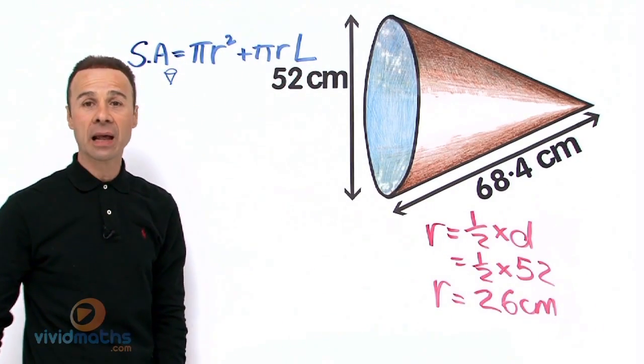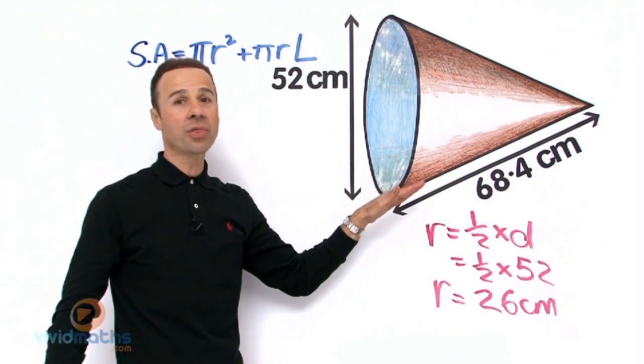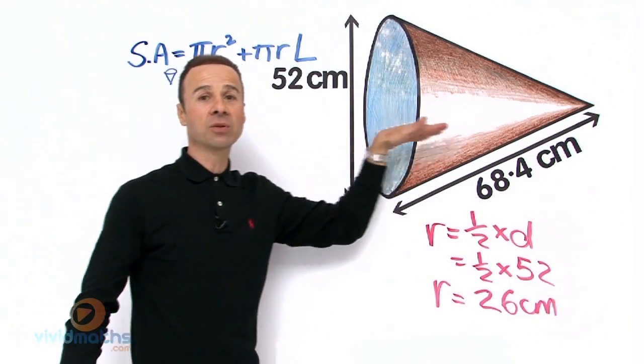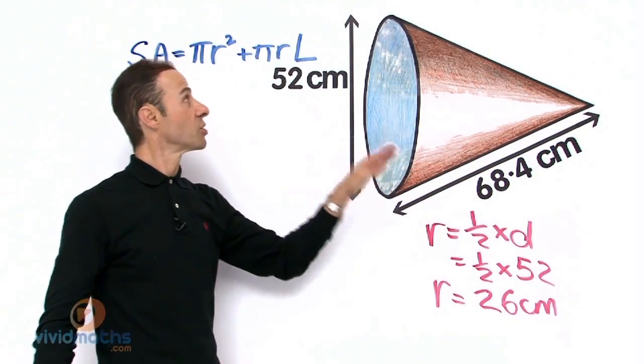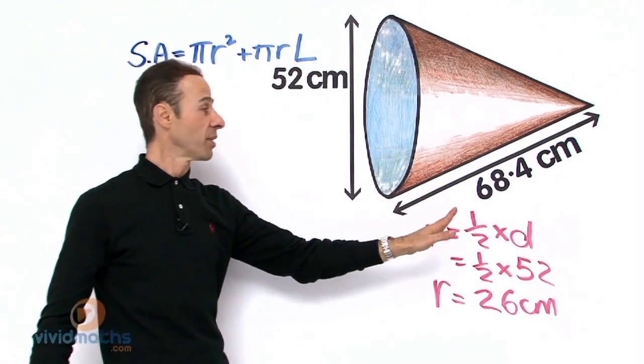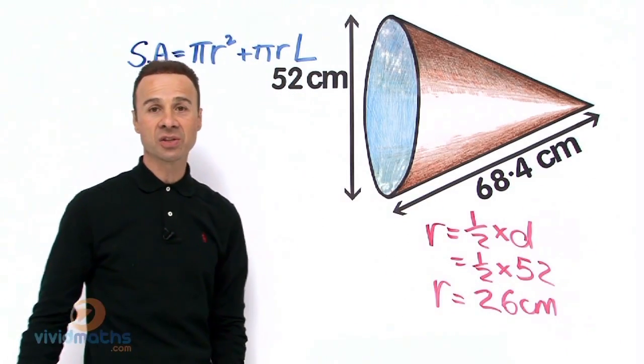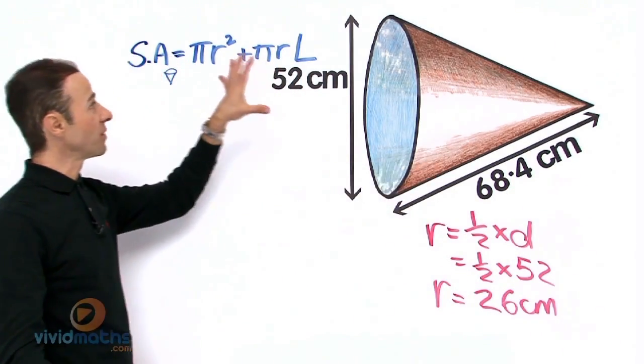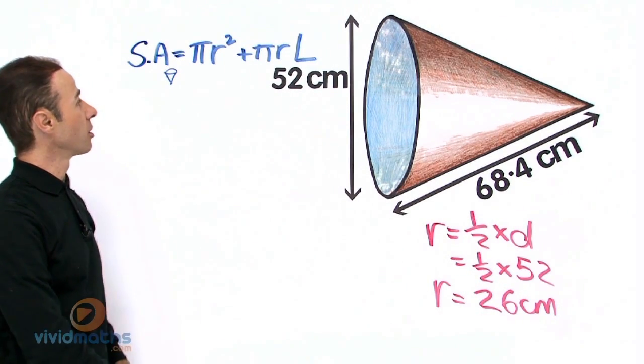And that is the length that goes around there as a slant. Now it's not the perpendicular height which goes through the middle, it's the slant right along there. So the good news is that goes straight into that, that is L right there, and we have a value of 68.4 centimeters. So let's plug and play, let's substitute these values into that formula and come up with and calculate the complete entire surface area.